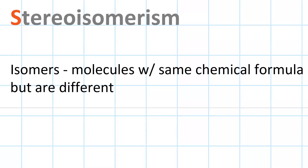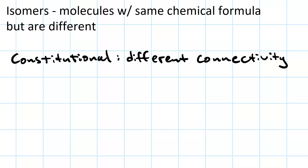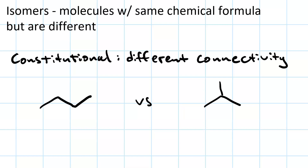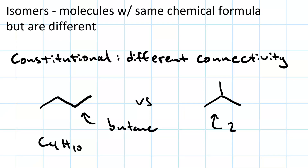Stereoisomerism. First let's do a little review. Isomers in general are molecules that have the same chemical formula, but they're different somehow. Constitutional isomers, for example, have different connectivity. Both of these molecules have the chemical formula C4H10 — this one is butane, and the one on the right is 2-methylpropane. So different connectivity for constitutional isomers.